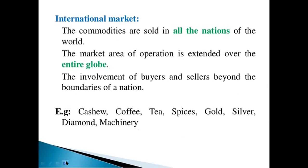In the international market, commodities are sold across the whole nation and beyond. The market area operates across the globe, with enormous buyers and sellers beyond the boundaries of nations. Examples include: coffee, tea, spices, gold, silver, and diamond.